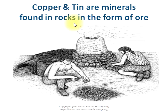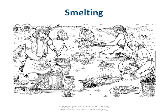Copper and tin are minerals found in rocks in the form of ore. These rocks, or the ore, had to be extracted through a process called smelting, which was a process of converting the ore into a metal.